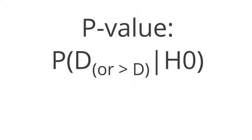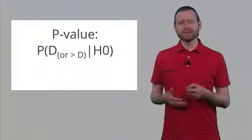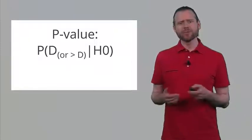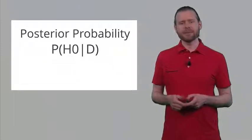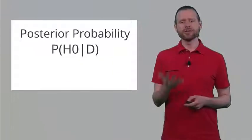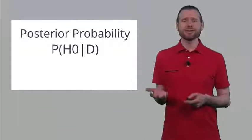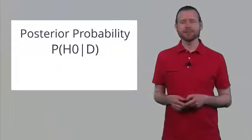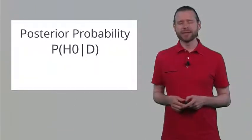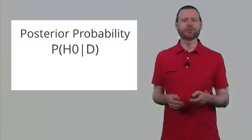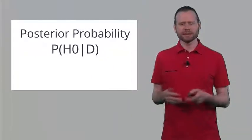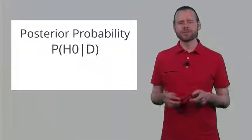Remember that a p-value expresses the probability of the data or more extreme data, assuming that the null hypothesis is true. Some people say this is actually not what you want to know. What you want to know is the probability that the null hypothesis is true given some data that you have collected. This is a posterior probability, given that you have collected some data and maybe some prior beliefs. What is the probability that the null hypothesis or the alternative hypothesis is true? Bayesian statistics allows you to express this probability.